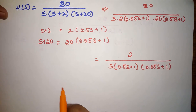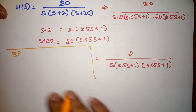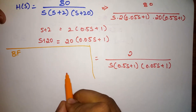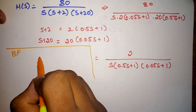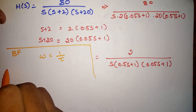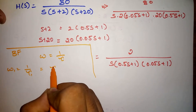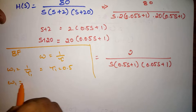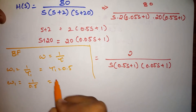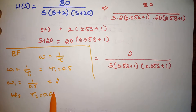From the obtained new transfer function, we should find out break frequencies using break periods. We know that frequency equals 1 divided by time period. So the first break frequency is 1 divided by the first break time period. The first break time period is 0.5, therefore the first break frequency will be 1/0.5, which equals 2. Similarly, the second break period is 0.05, therefore the second break frequency will be 20.